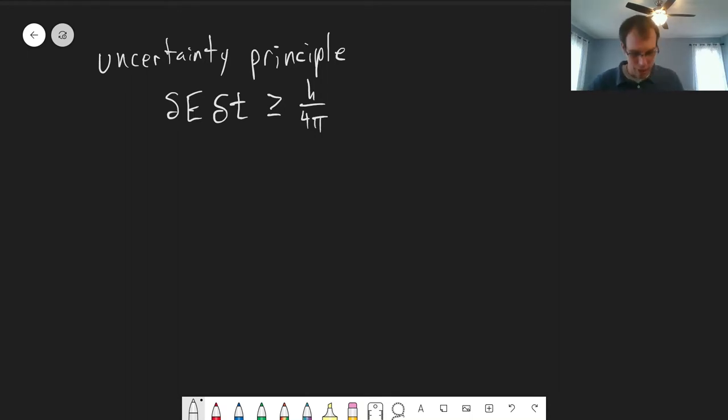This has to do with delta E. So let's define what this is. This is the uncertainty in the energy of a state of an excited state, meaning this also translates to uncertainty in the frequency that it's going to absorb or emit.